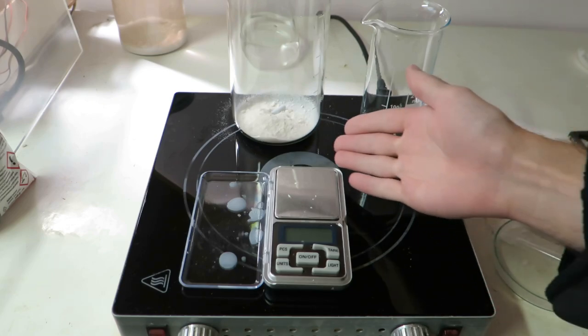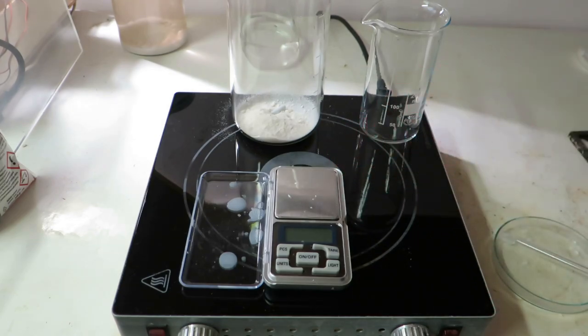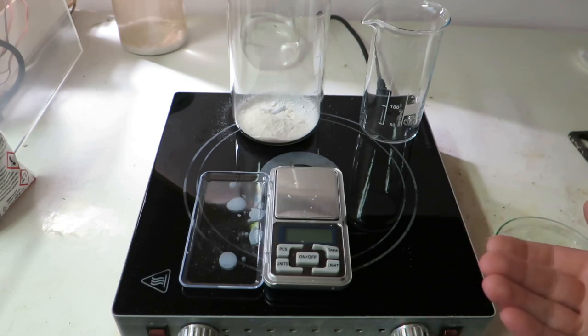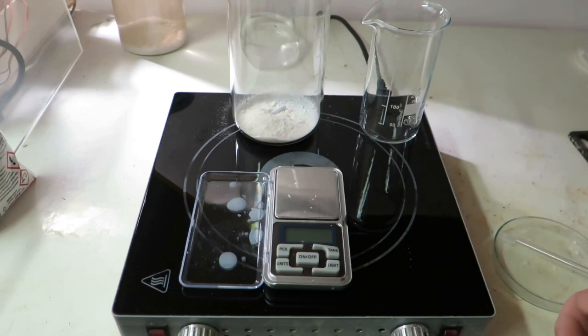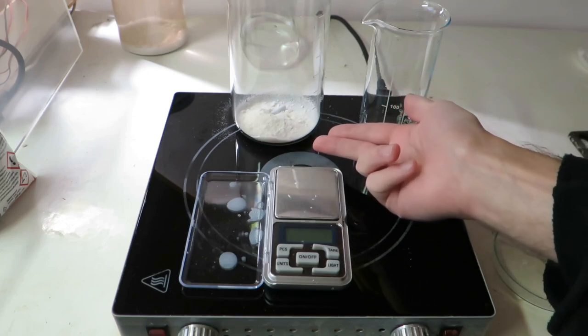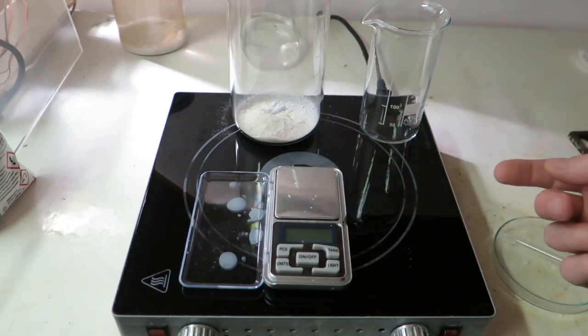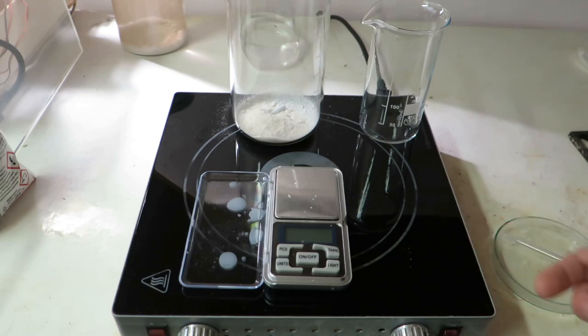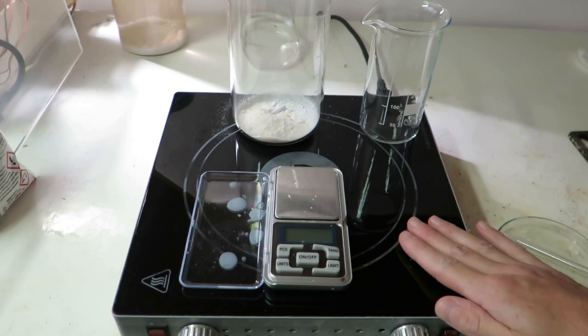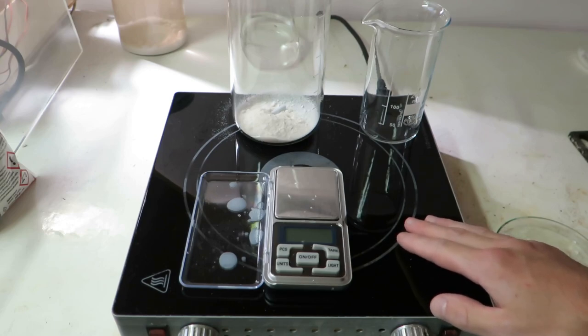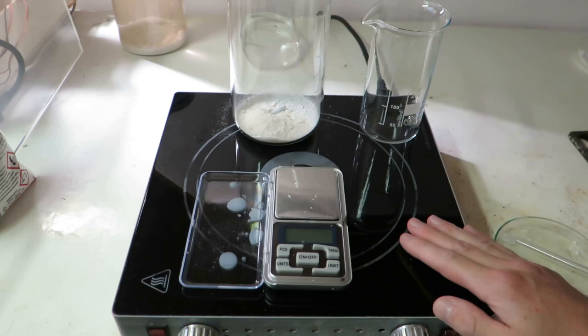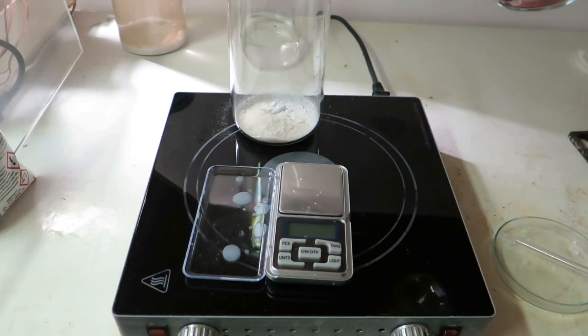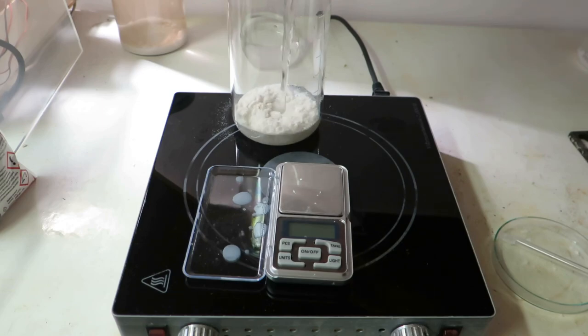Now the question is what is the best way to neutralize the benzoic acid with calcium hydroxide, because calcium hydroxide is fairly insoluble and benzoic acid as well. I figured that probably best way would be to dissolve benzoic acid in water and then add hydroxide dispersed in water slowly. Now the calcium benzoate is soluble in water. I guess I will start with benzoic acid, we will add about 100 mls of water.